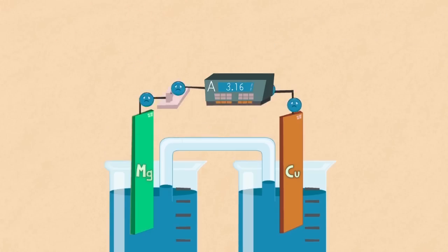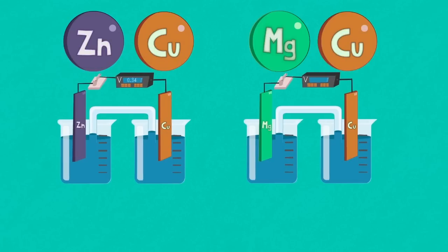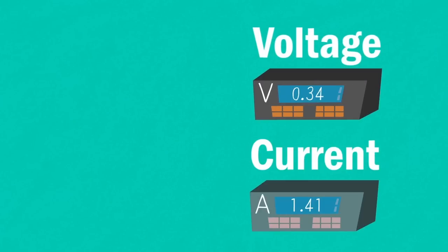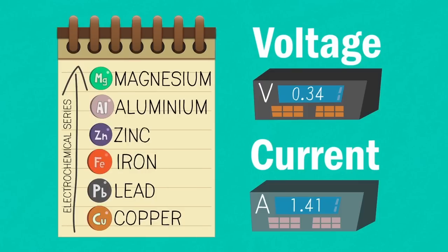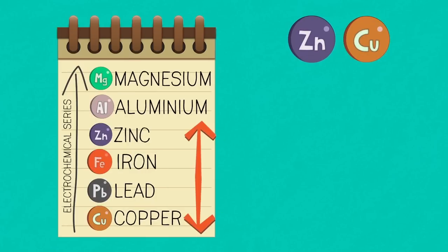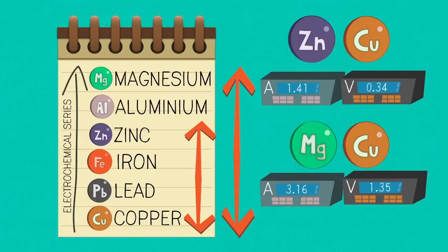In summary, what have we learned? One: different combinations of metals connected in an electrochemical cell will produce different voltages. Two: the size of the voltage and the current is dependent on the metals' position in the electrochemical series. And three: the further apart the metals are in the electrochemical series, the greater the size of the current and the voltage produced.